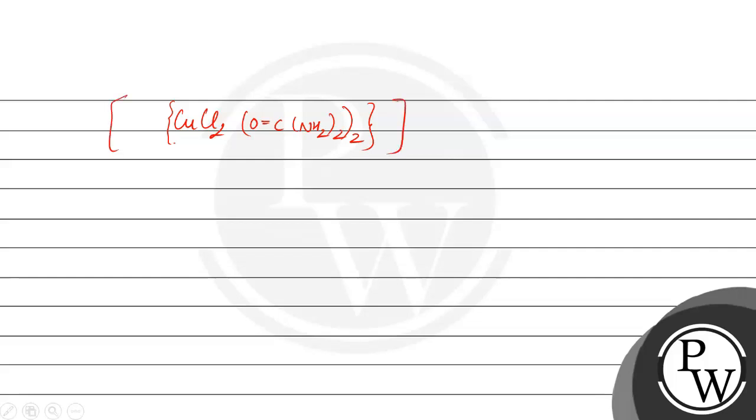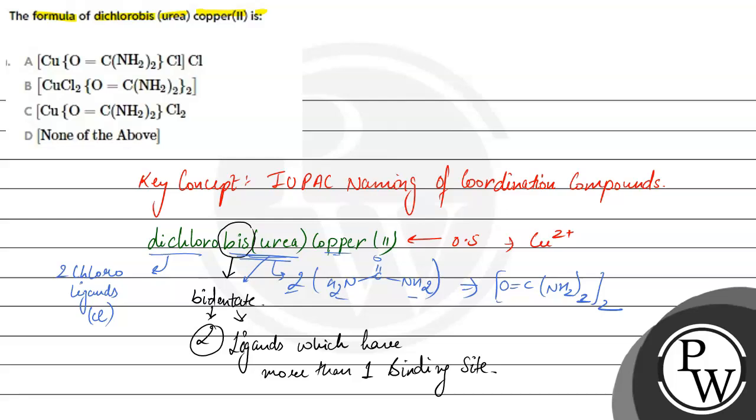We will have the formula of the compound. Here if we can see, how many chlorine atoms? We have 2 chlorine atoms. We have bis, bis means 2. Urea, this is complete urea. And here we have copper. The copper is in plus 2 oxidation state. So what is the correct option?